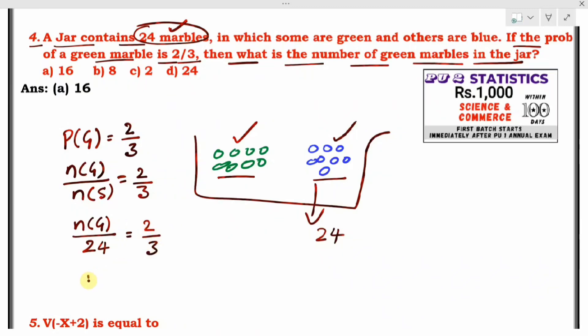Then number of green balls will become 2/3, this 24 will be multiplied. 3 times 8 is 24, so 8 multiplied by 2 is 16. So the answer for number of green balls is 16. Option A is the correct answer.